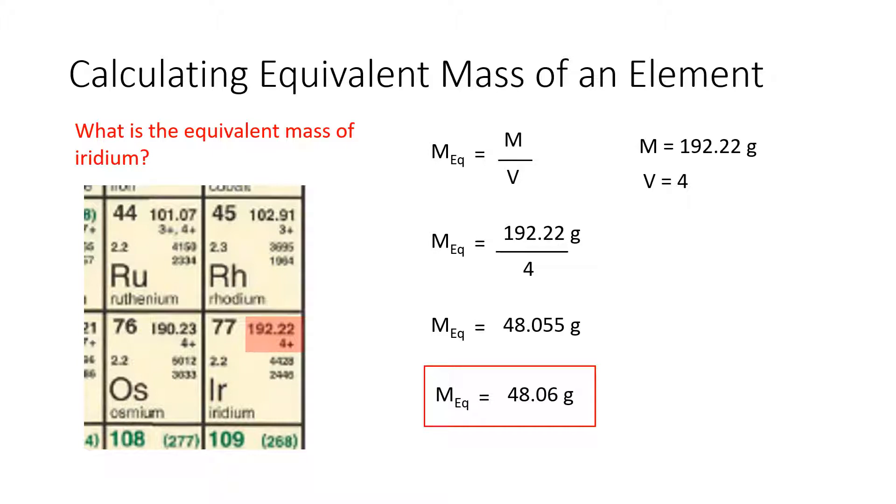So the mass of one equivalent of iridium would be 48.06 grams. Now if I were to make a little drawing to pretend that this is the amount or the group of iridium that would be used in making a chemical reaction with another element, we can see that there's quite a bit. Cool, so that's the basics of calculating an equivalent mass.